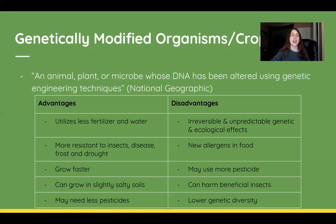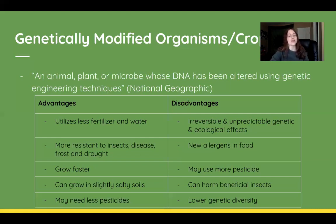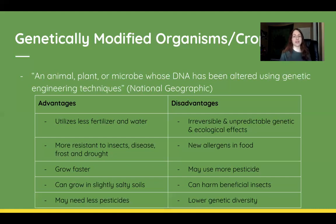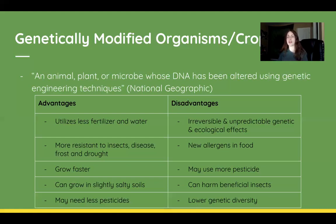GMOs just break down differently in your stomach like all foods do. On the other hand, they may actually use more pesticide in some cases, since farmers still need to manage pests. GMOs can also harm beneficial insects, which could trigger trophic cascades.